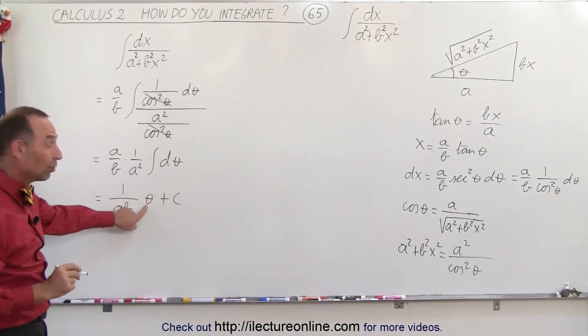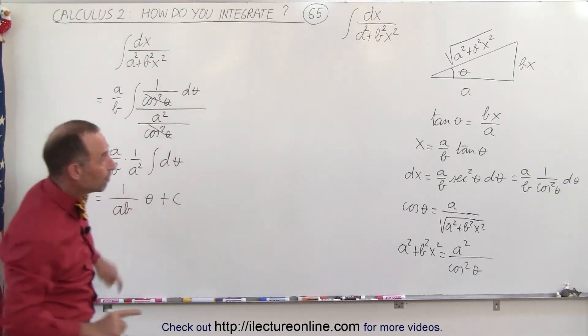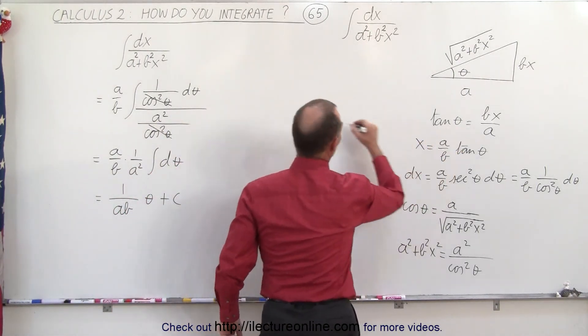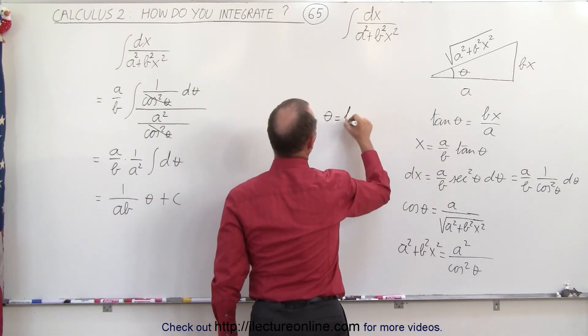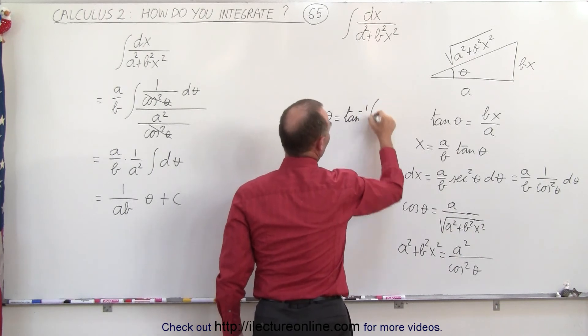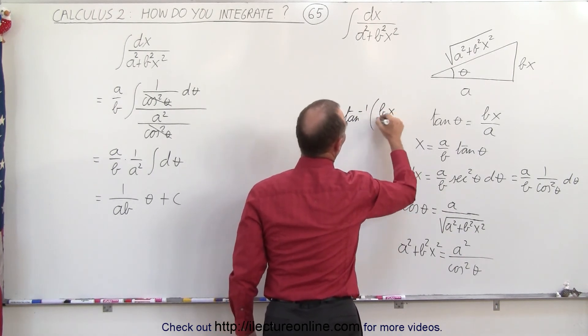And now we have to substitute back in what theta is equal to. So let's go over here, and we can write that theta is equal to the arctangent of BX over A.